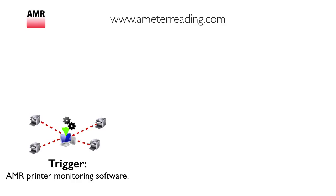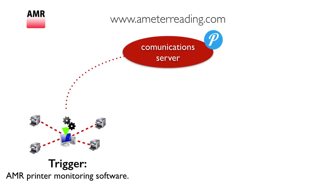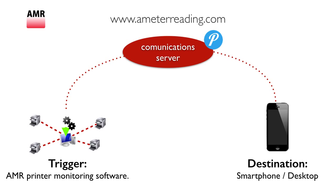First of all you need a trigger — you need our software to trigger the alarm when a low toner comes into your printer. You need a communication server, and you need your destination: an app on your cell phone.